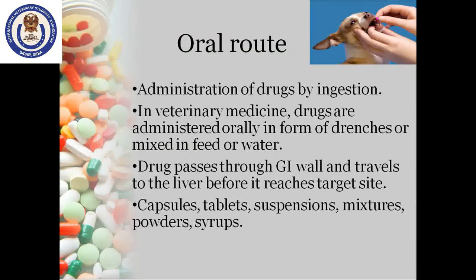The first is oral route. Oral route refers to administration of drugs by ingestion. It is the oldest, easiest and commonest mode of drug administration. In veterinary medicine, drugs are administered orally either in the form of drenches or mixed in feed or water. Drugs may also be given through tubes placed in the gastrointestinal tract, like nasogastric tube or stomach tube. After oral administration, the drug passes through the gastrointestinal wall and travels to the liver before it is transported via the bloodstream to its target site. This is known as first-pass effect.